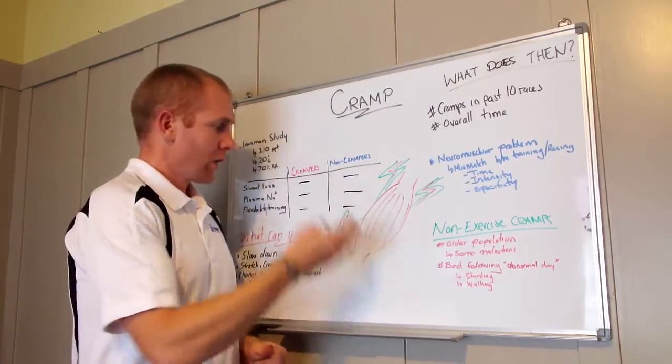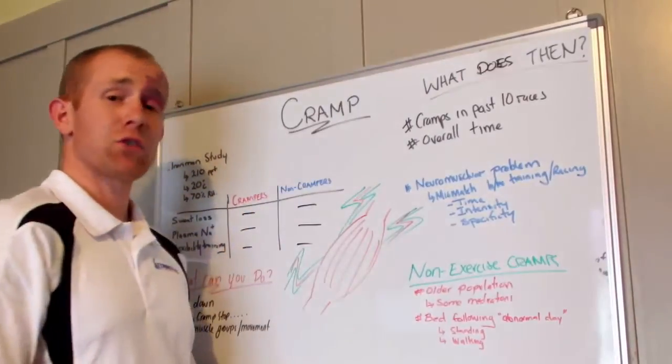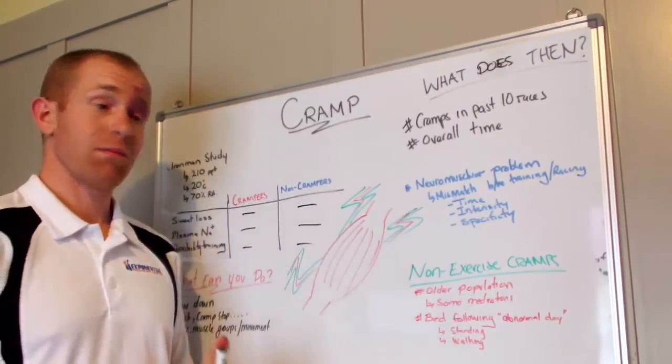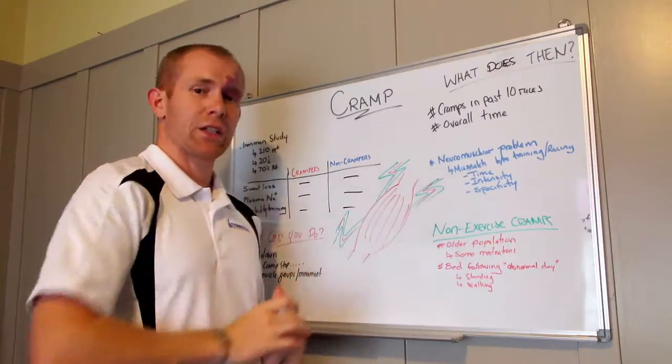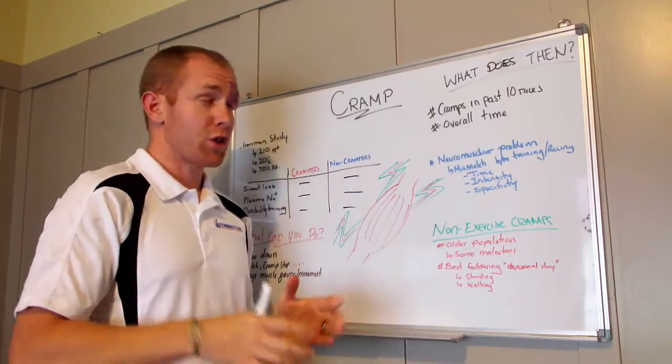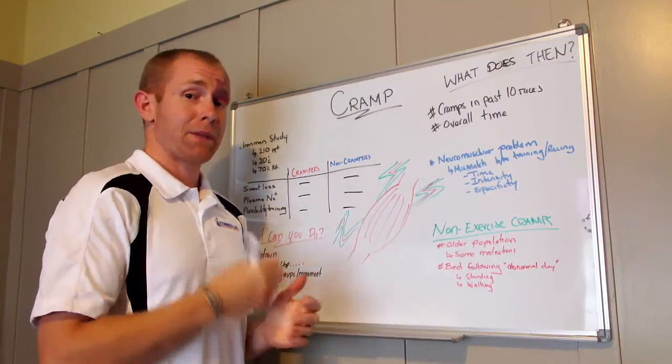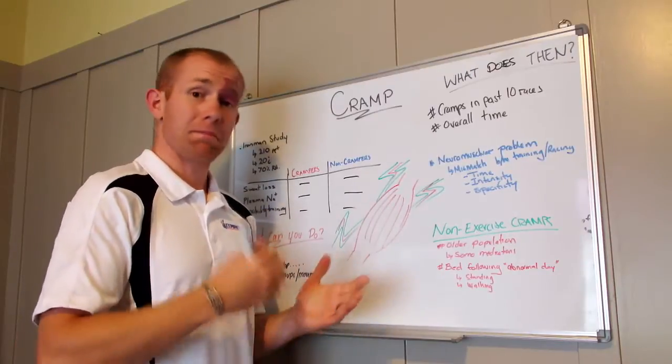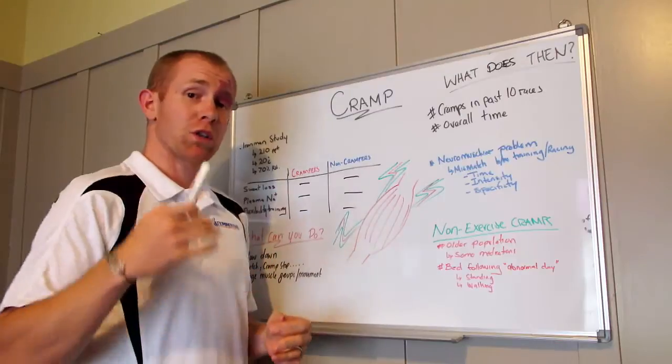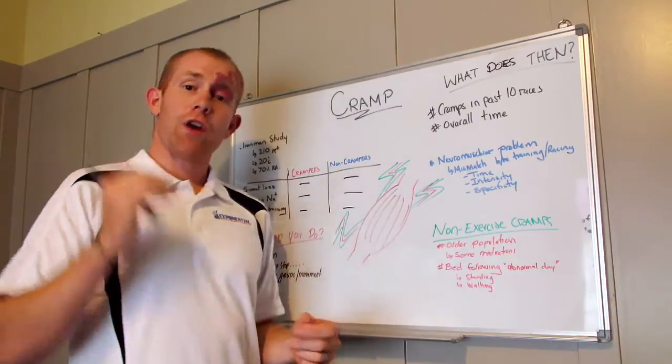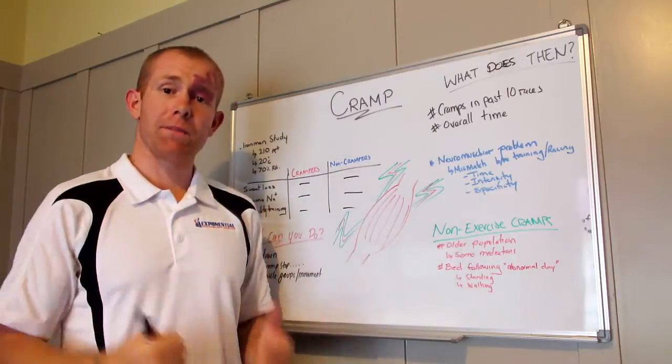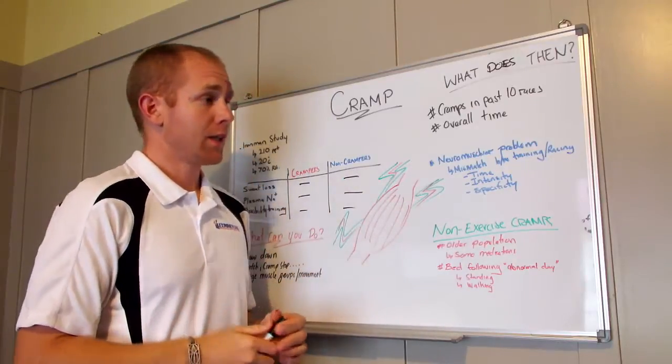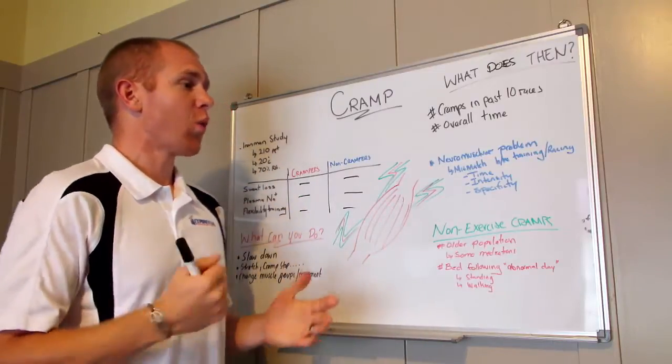So what did actually predict cramps? One thing was those that had cramped in the previous ten races were more likely to cramp in this one. There's some really interesting research starting to emerge about a potential cramping gene. Some people have a gene that predisposes them to cramp more. The other thing related to cramping was overall finishing time. Those people that finished fastest cramped the most.